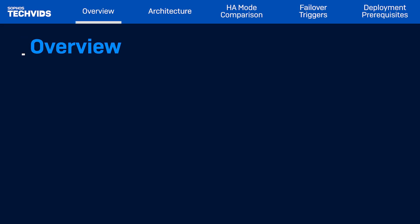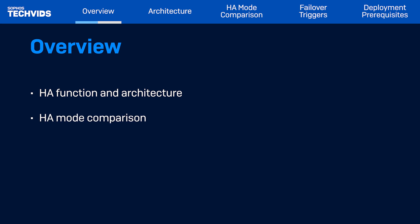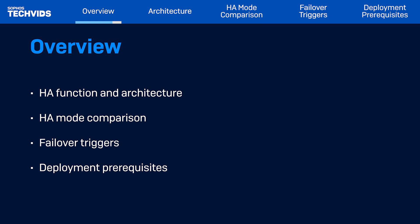Today, I'll explain Sophos Firewall's core HA functionality and architecture, illustrating the packet flow in both modes — active-active and active-passive. Then I'll further compare and contrast the HA modes, discuss failover triggers, and lastly outline the prerequisites for preparing your firewalls for HA deployment.